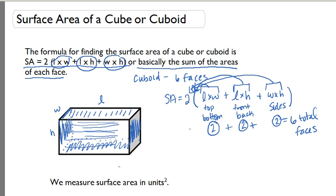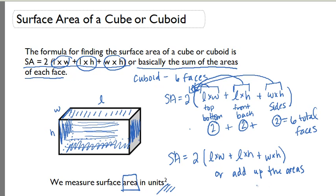Remember, since surface area is an area measurement, we don't measure it in cubic units. We measure it in square units. So again, that surface area formula is simply two times length times width, plus length times height, plus width times height. Or you can simply add up the areas of the faces. Both ways will give you the surface area.